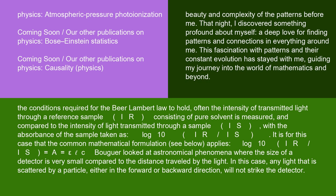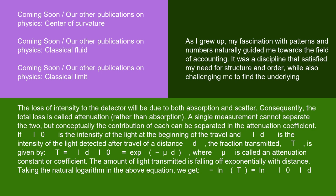Bouguer looked at astronomical phenomena, where the size of a detector is very small compared to the distance traveled by the light. In this case, any light that is scattered by a particle — either in the forward or backward direction — will not strike the detector. The loss of intensity to the detector will be due to both absorption and scatter. Consequently, the total loss is called attenuation rather than absorption. A single measurement cannot separate the two, but conceptually the contribution of each can be separated in the attenuation coefficient.